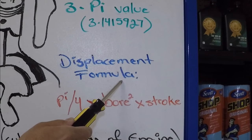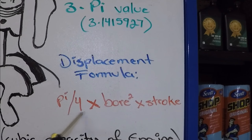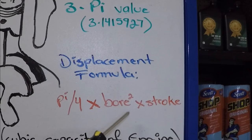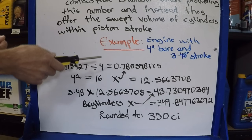Okay, so to find the displacement of an engine, here's the formula: pi divided by 4 multiplied by the square root of the bore and multiplied by the stroke of the engine. So we're going to see if this formula is accurate. We're going to go ahead and provide an example, just like I said.